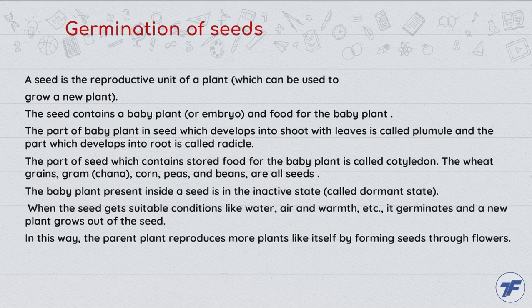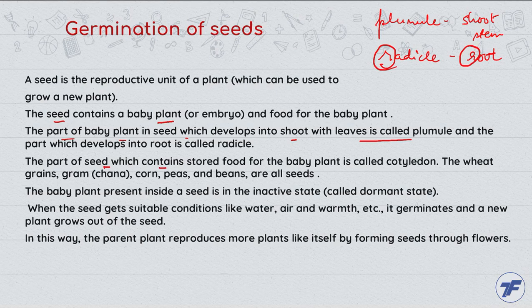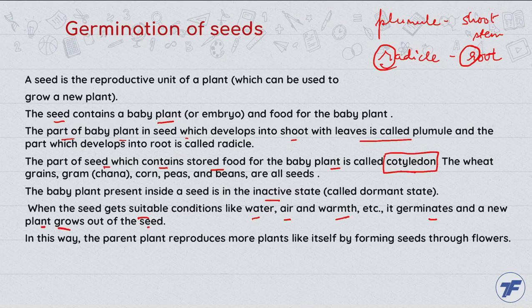Germination: a seed is a reproductive unit. The seed contains the baby plant. The part of the baby plant in the seed which develops into shoot with leaves is called the plumule, and the radical develops into root. The part of the seed which contains stored food for the baby plant is called the cotyledon. Wheat grains, gram, corn, peas and beans are all seeds. The baby plant inside the seed is in a dormant state. When the seed gets suitable conditions like water, air and warmth, it germinates and a new plant grows out of the seed. In this way, the parent plant produces more plants like itself.